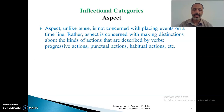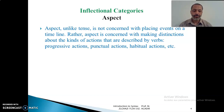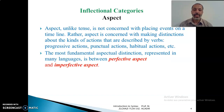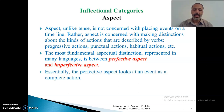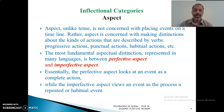Aspect is the second inflectional category. Unlike tense, it is not concerned with placing events on a time line. Rather, aspect is concerned with making distinctions about the kinds of actions described by verbs. The action can be progressive, punctual, habitual, and so on. The most fundamental aspectual distinctions, represented in many languages, are the perfective aspect and the imperfective aspect. The perfective aspect looks at an event as a complete action, whereas the imperfective aspect views an event as a process, or a repeated or habitual event.